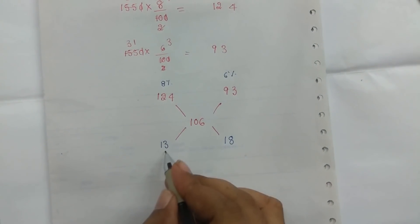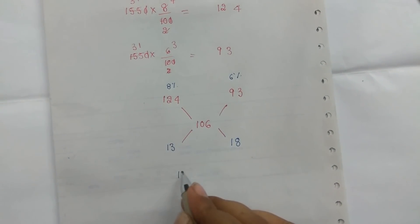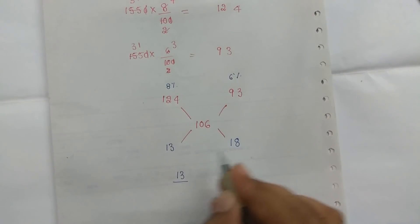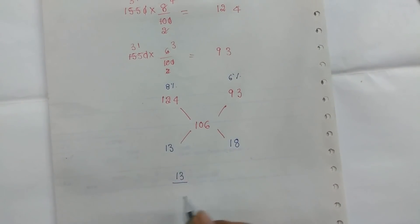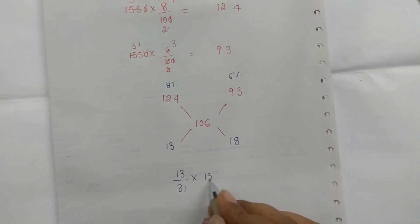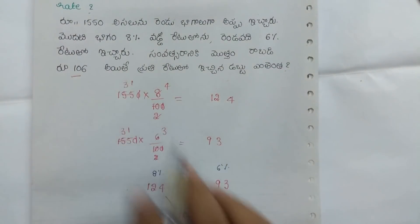8 percent is 5 percent. Total is 17 plus 13. This is 15 percent. First amount is 15 percent.